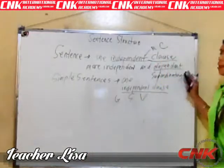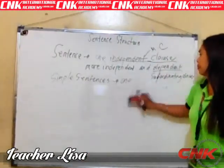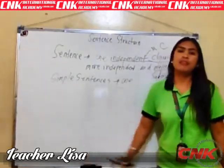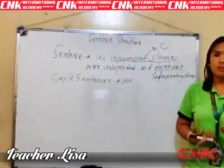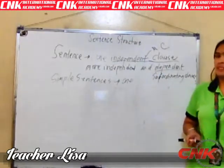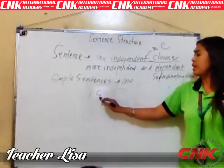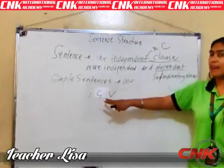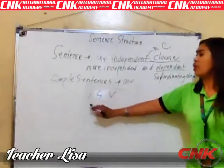Let's give an example of a simple sentence. But before I give you the example, I will give you the easiest pattern in order for you to write simple sentences. First pattern, we have S and V — subject and verb. We have one subject and one verb.